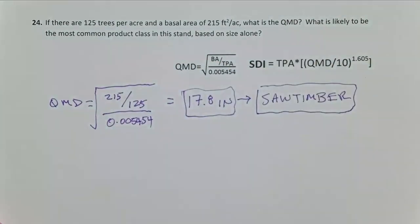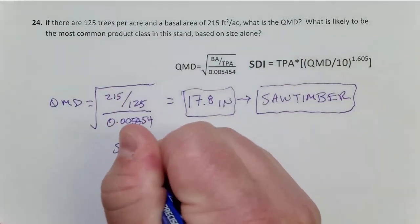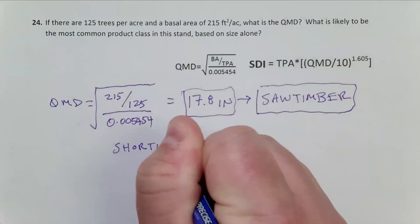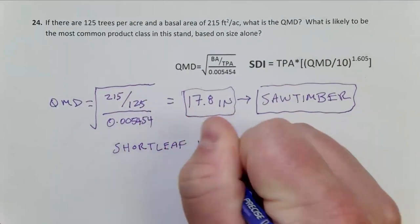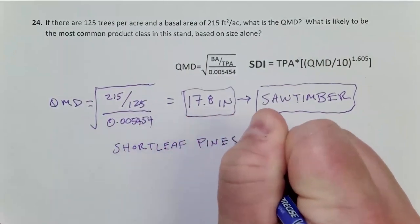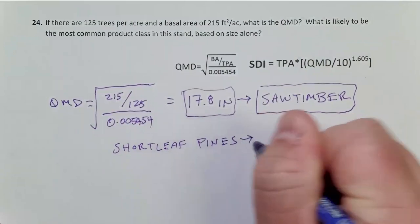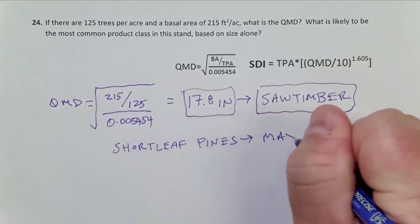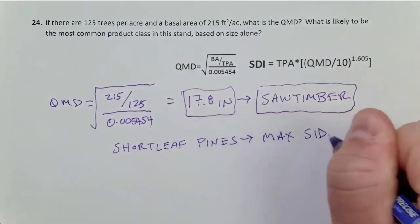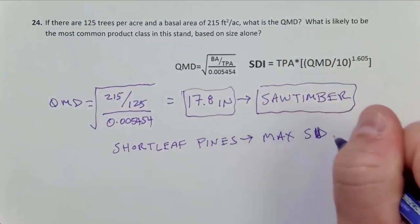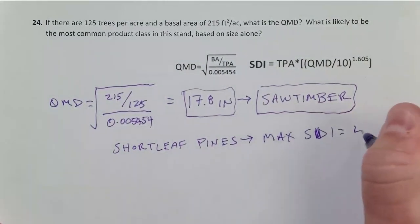Again, let's take it a step forward. Let's say, the problem doesn't give you this. Let's say hypothetically, what if these are short-leaf pines? Well, we know the max SDI for short-leaf pines. Max SDI equals 400 at 10 inch trees per acre.